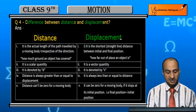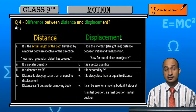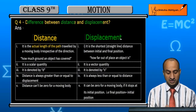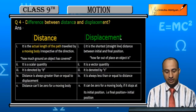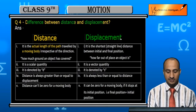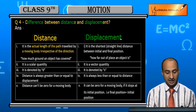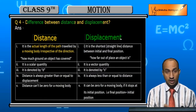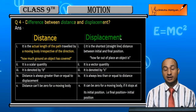The distance is the actual length of the path traveled by a moving body. It is irrespective of direction — direction is not considered. So distance refers to how much ground an object has covered during its motion.